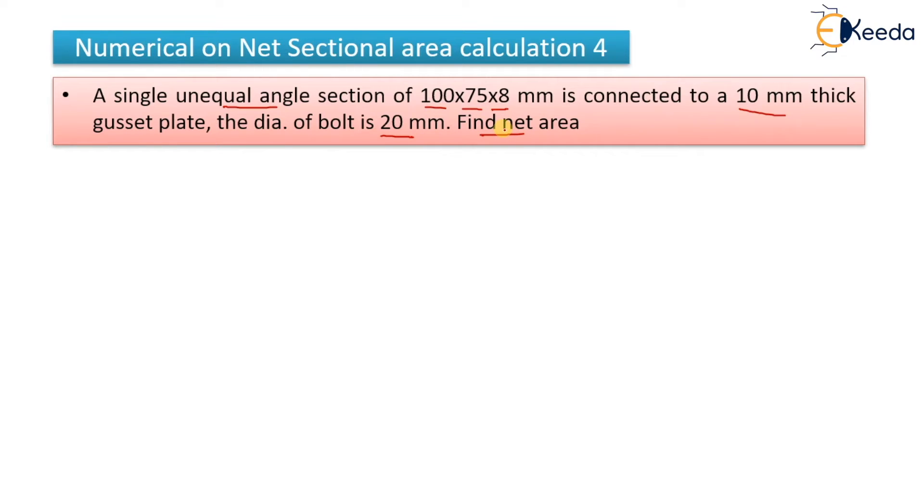In previous video also we have calculated the net area in the same way we will do that. So first what we will do, we will draw the diagram. It says that the gusset plate is having a thickness of 10 mm. So I will draw a gusset plate here first. Let us assume that this is your gusset plate, it is of how much thickness, 10 mm.